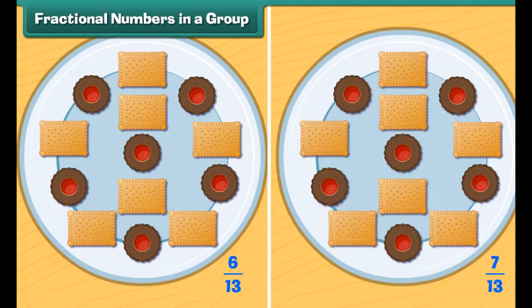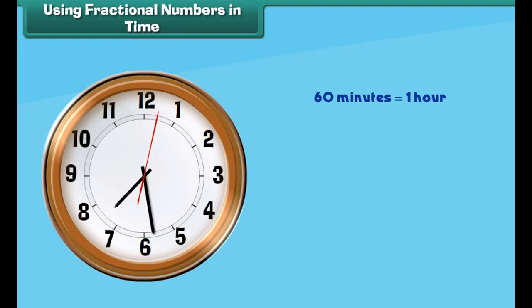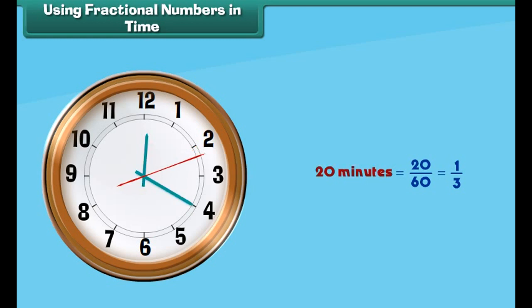We can also use fractional numbers to talk about items in a group. There are thirteen biscuits on this plate, so that is our denominator. But the biscuits are not the same type — six of them are chocolate biscuits, whereas seven of them are milk cream biscuits. So those are numerators. Therefore, six thirteenths are chocolate biscuits and seven thirteenths are milk cream biscuits.